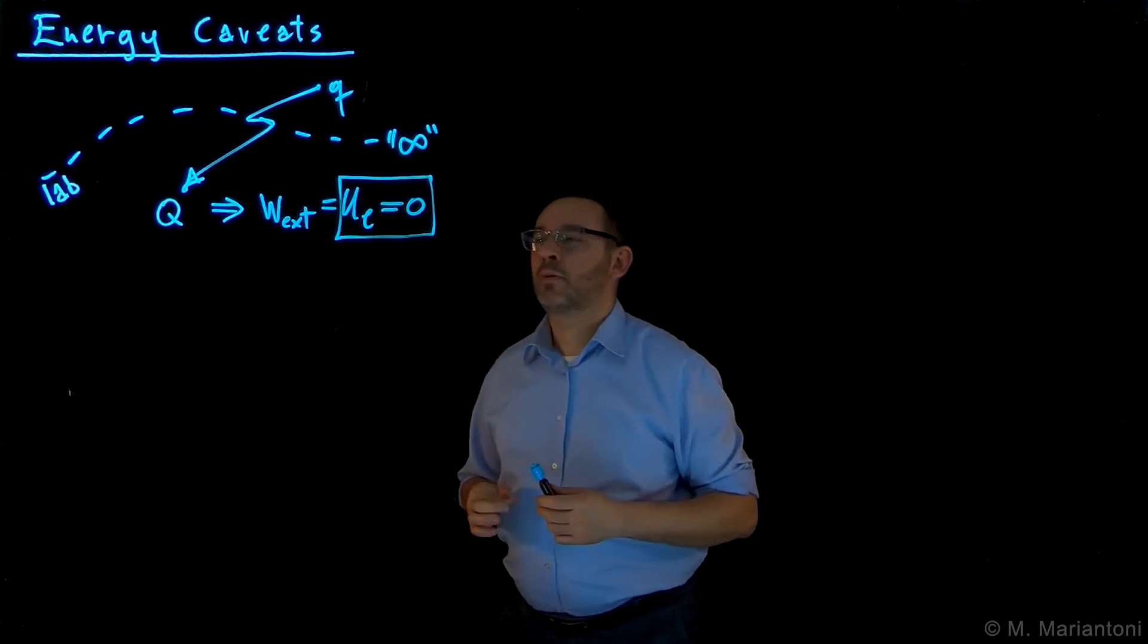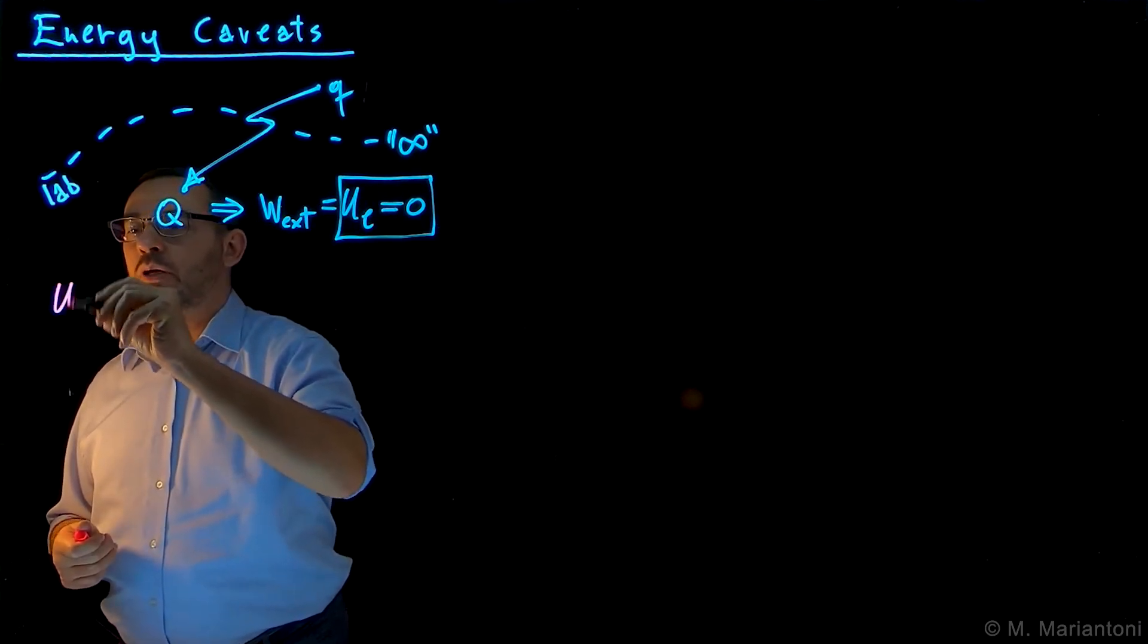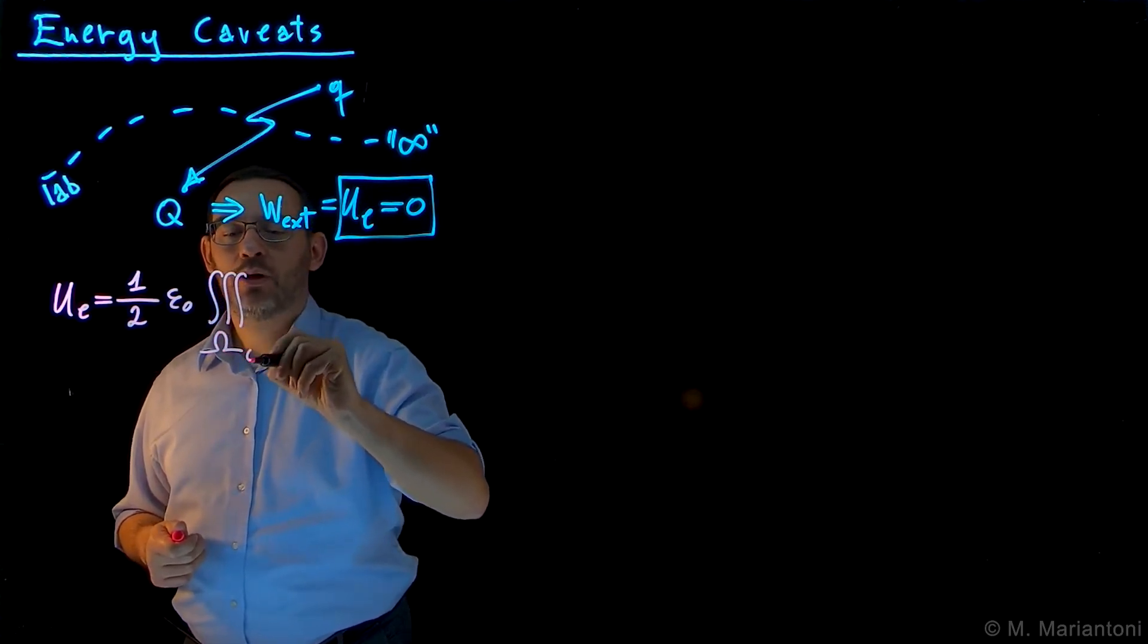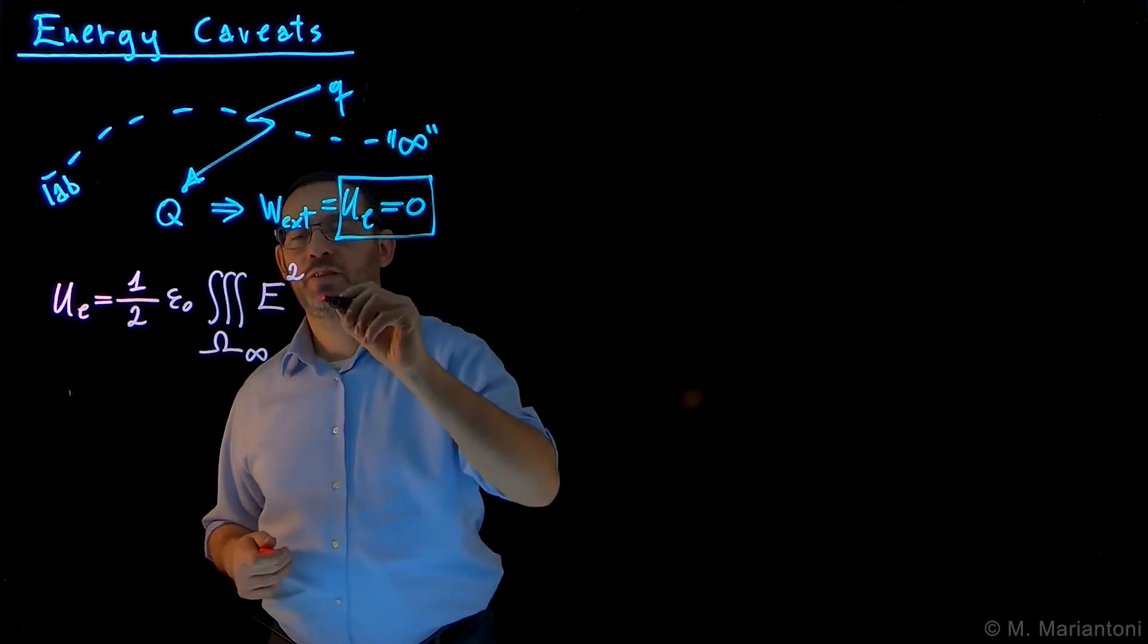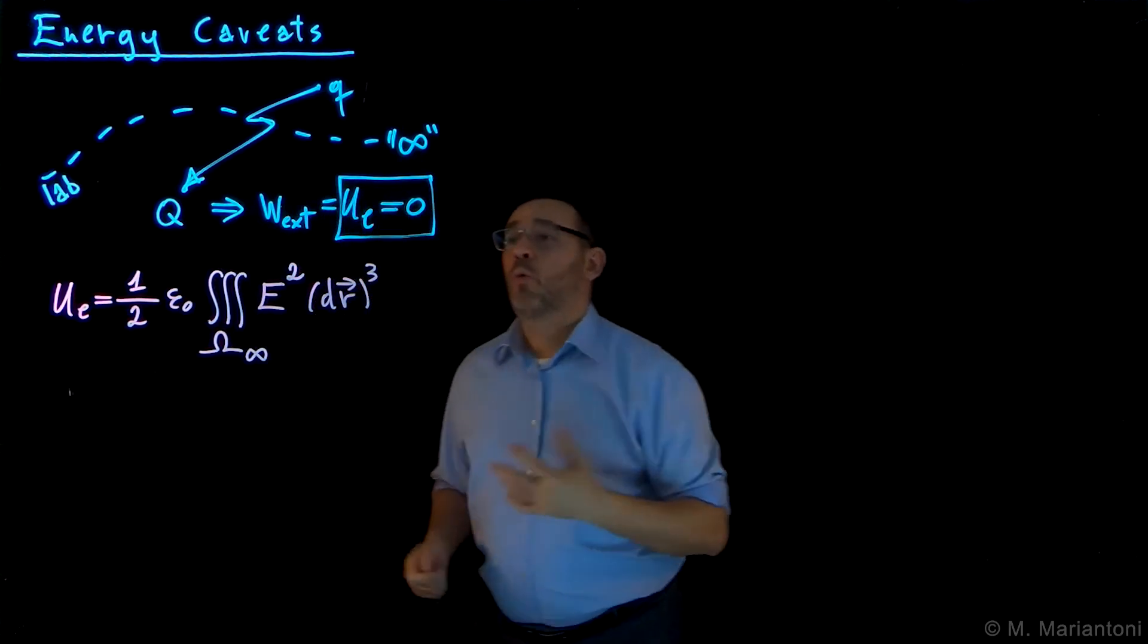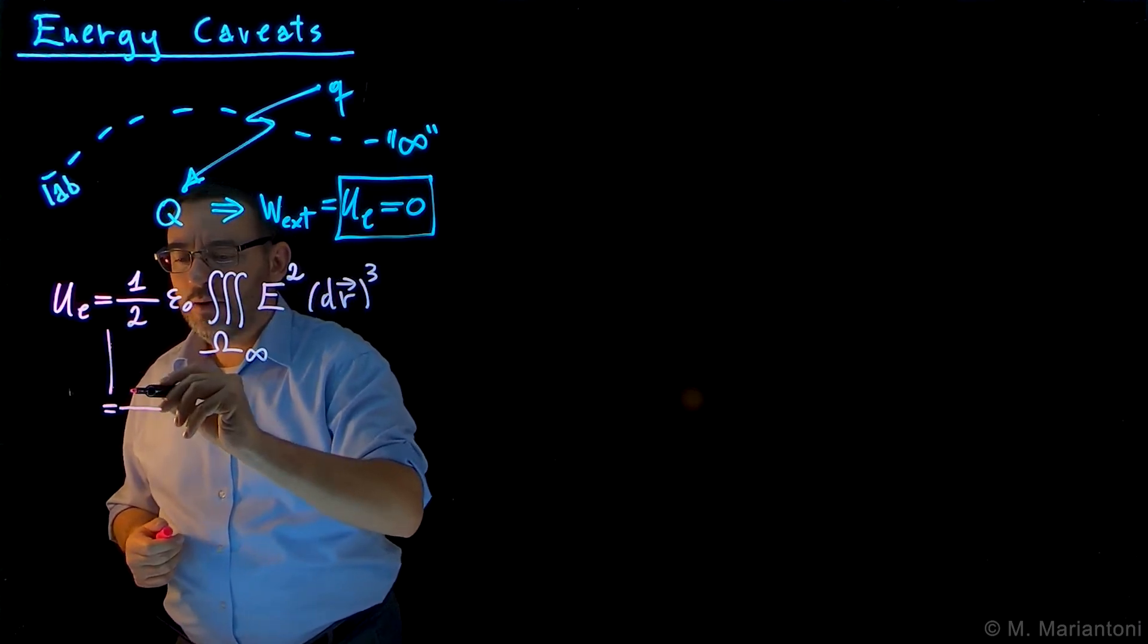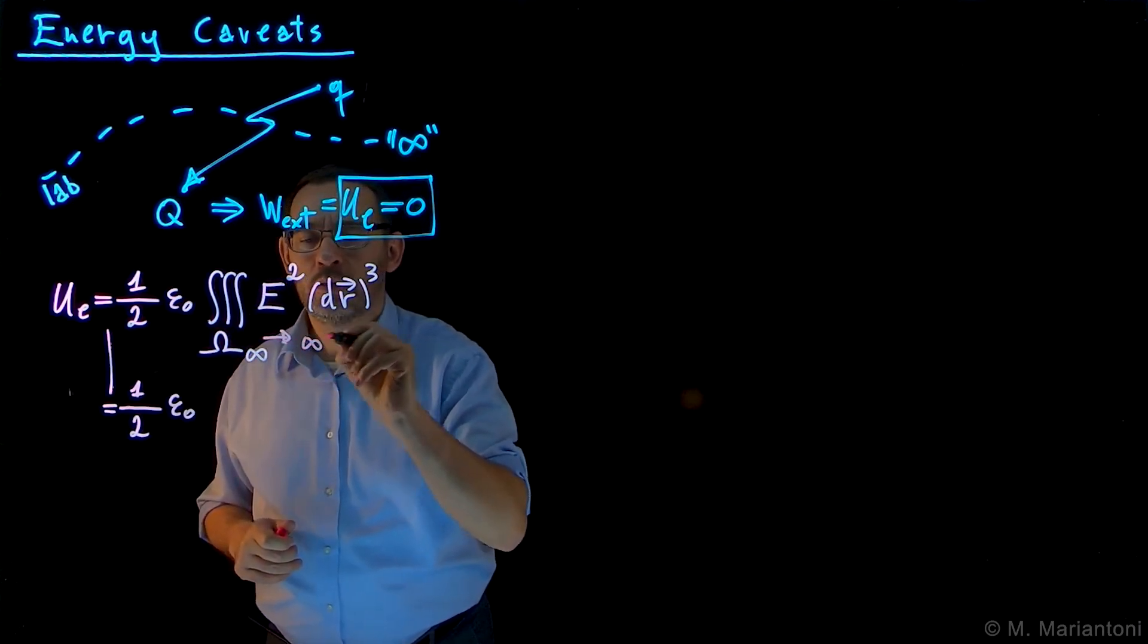Now suppose that by mistake, as it turns out, we want to use this expression for the electrostatic energy: Ue equals one half epsilon naught, the volume integral in the entire universe, capital omega infinite, of E quantity squared, the norm of the electrostatic field squared, in dRQ cubed. We know that E for a charge Q at point capital Q is Coulombic type, so this can be readily rewritten as one half epsilon naught, omega infinite as always. We can choose an infinite sphere.